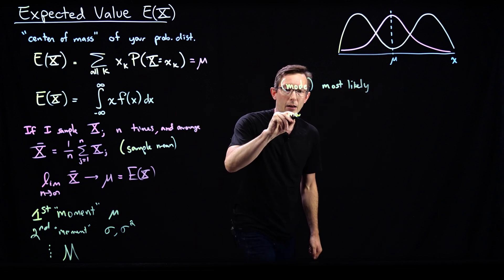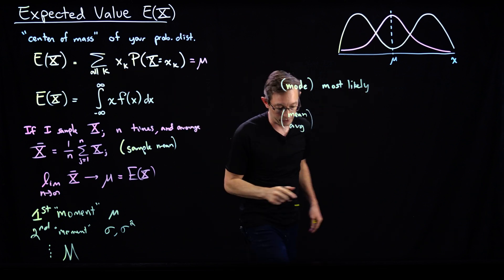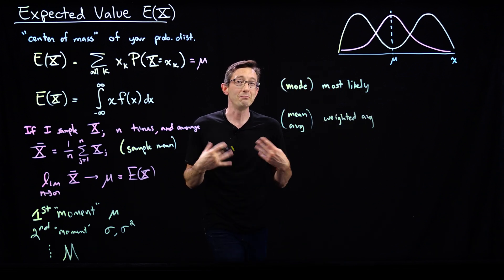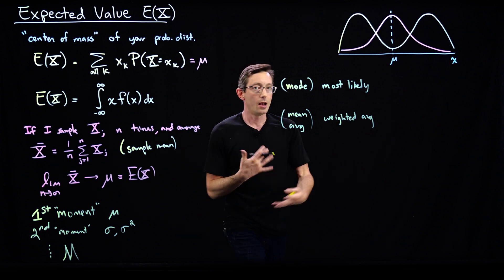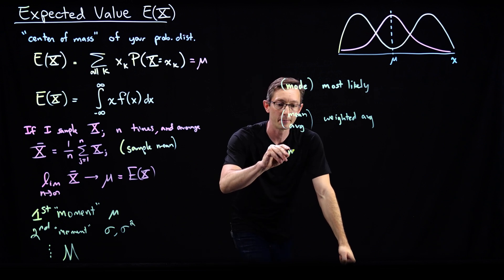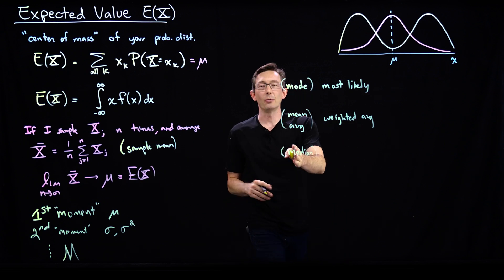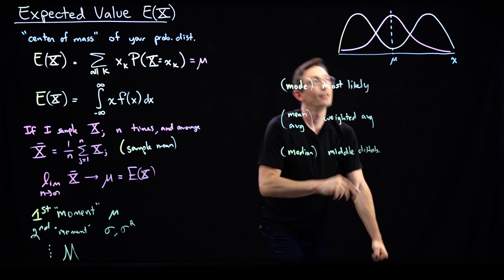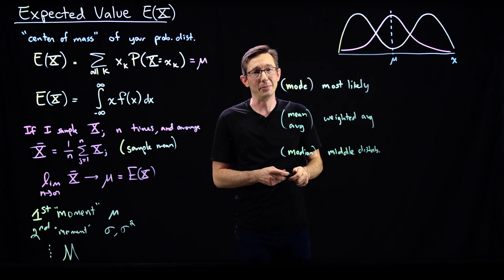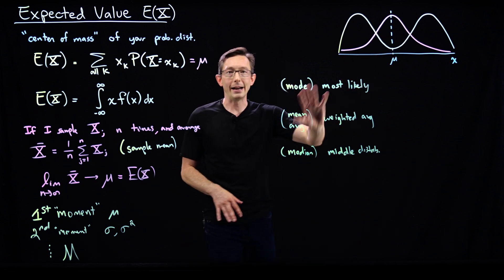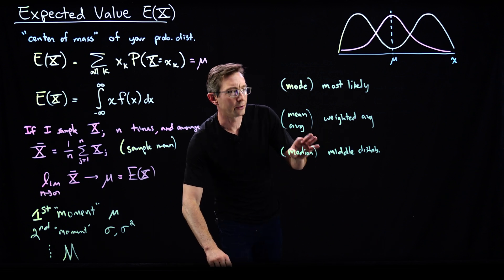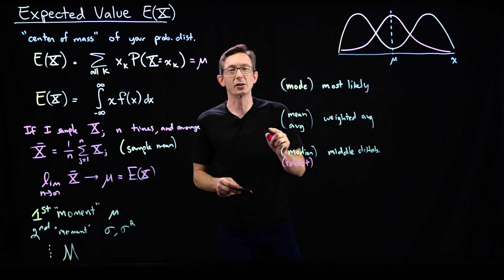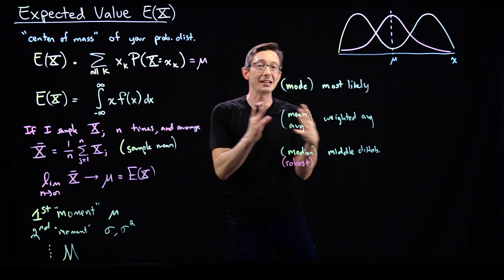There is the mean or the average — that's what we computed here, the expected value, the weighted average. And then there's a third value called the median, which is oftentimes the most useful for statistics where there are outliers or weird distributions. The median is the middle of the distribution — literally the value that's in the middle. The expected value is highly sensitive to outliers, while the median is very robust to outliers.